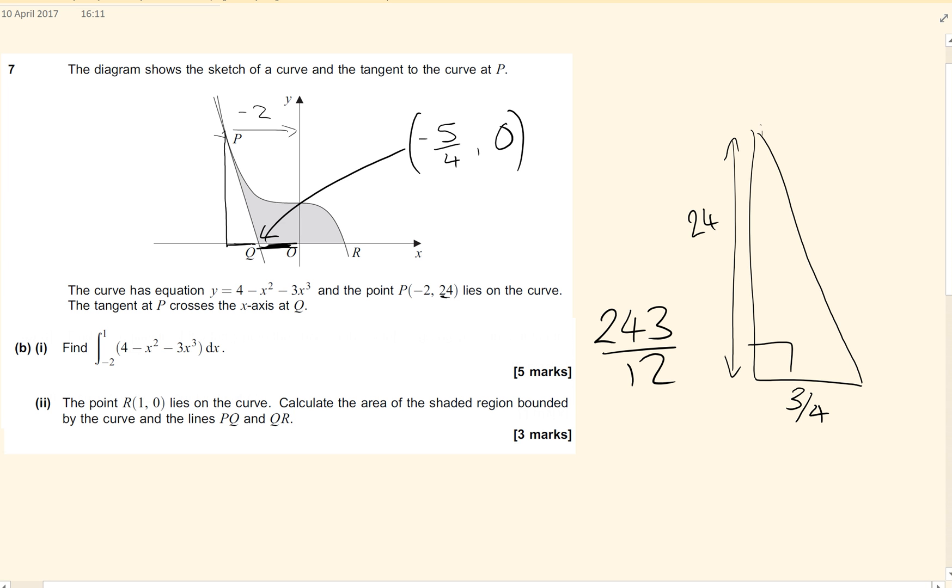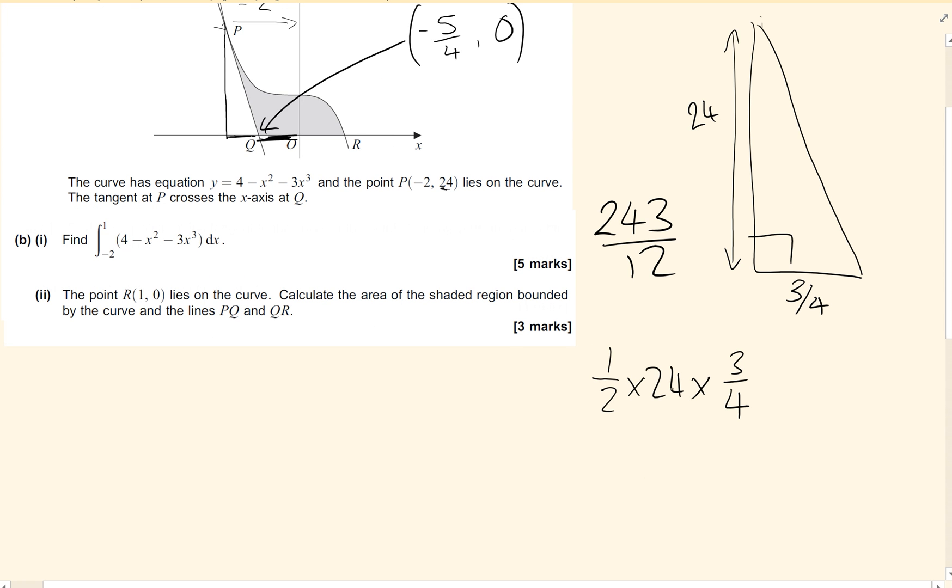So this is how we get, we've ended up with a right angle triangle, 24, 3 quarters. So half base times height, so half times 24 times by 3 quarters. Just taking our time, half of 24 is 12, 3 quarters of 12 is 9.